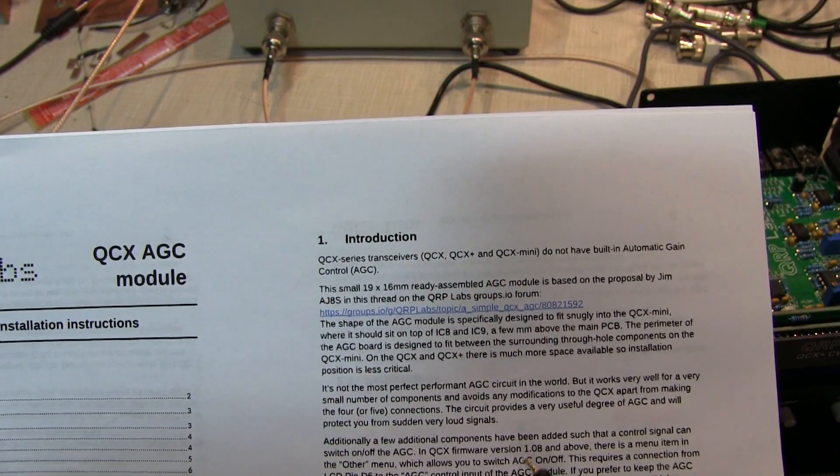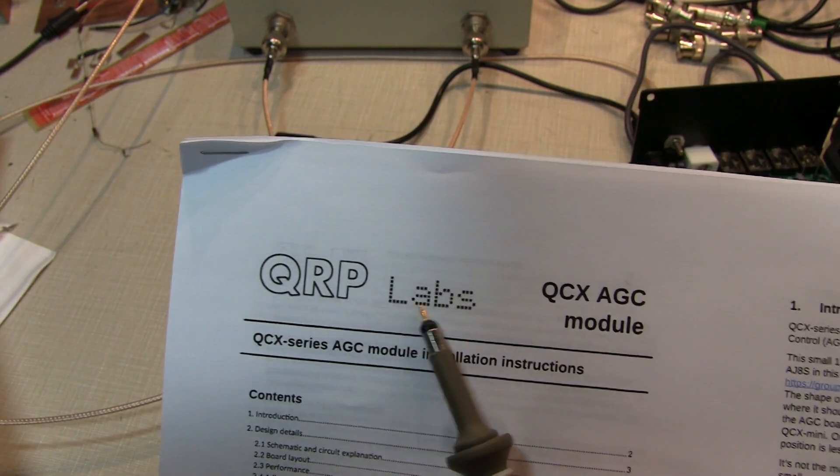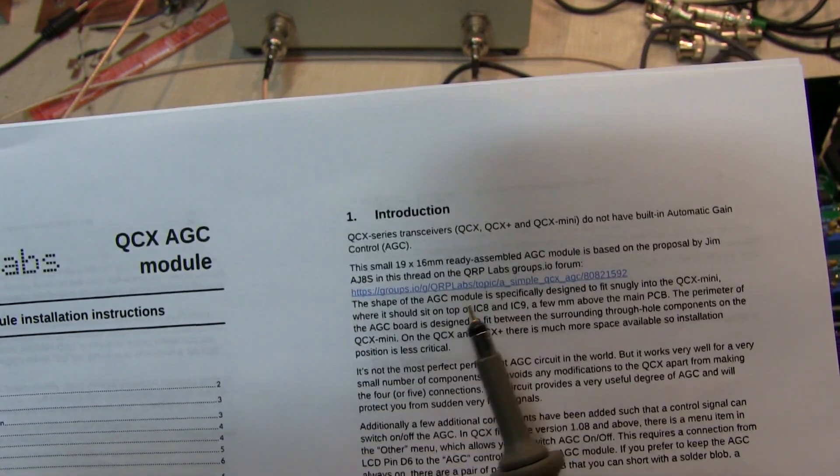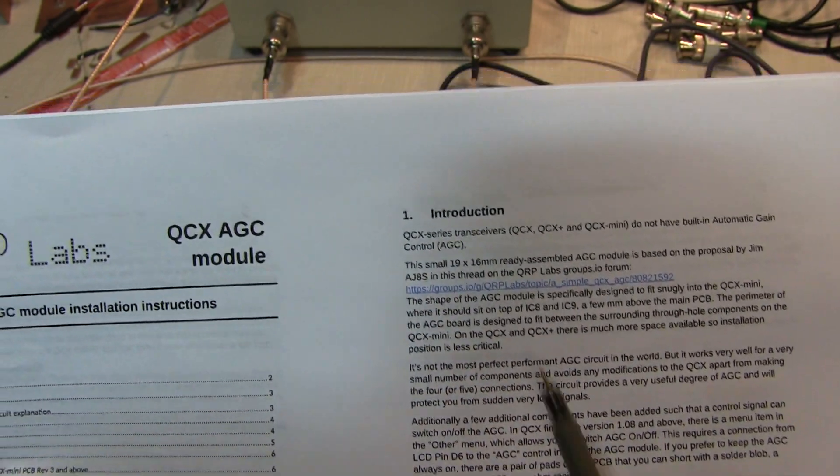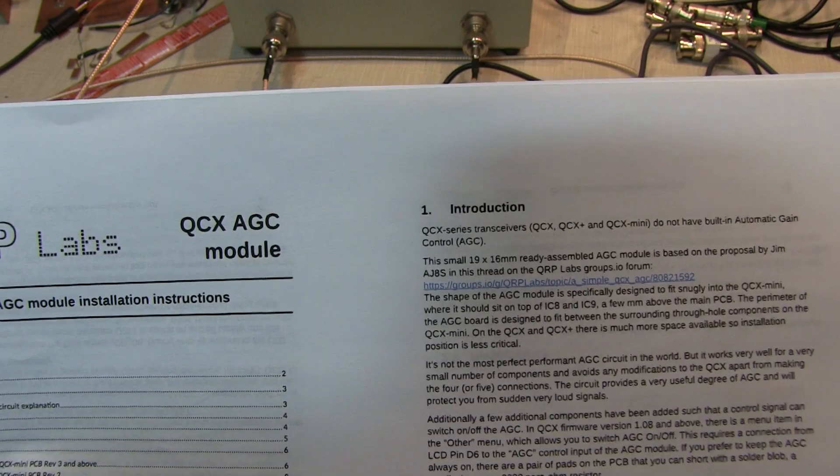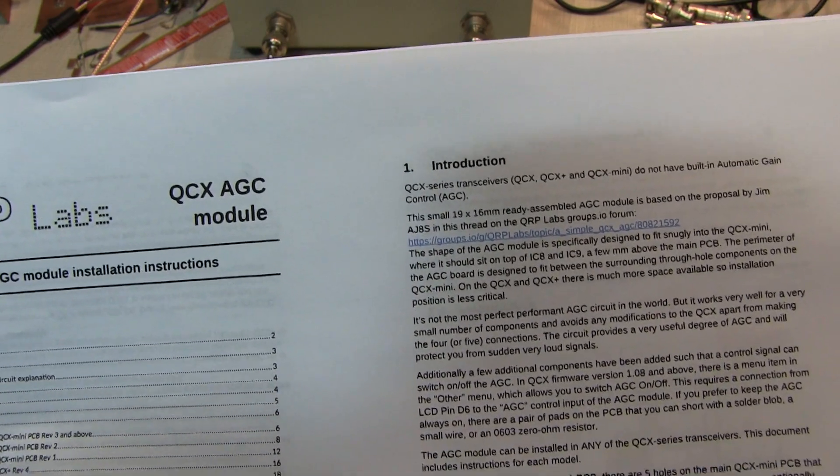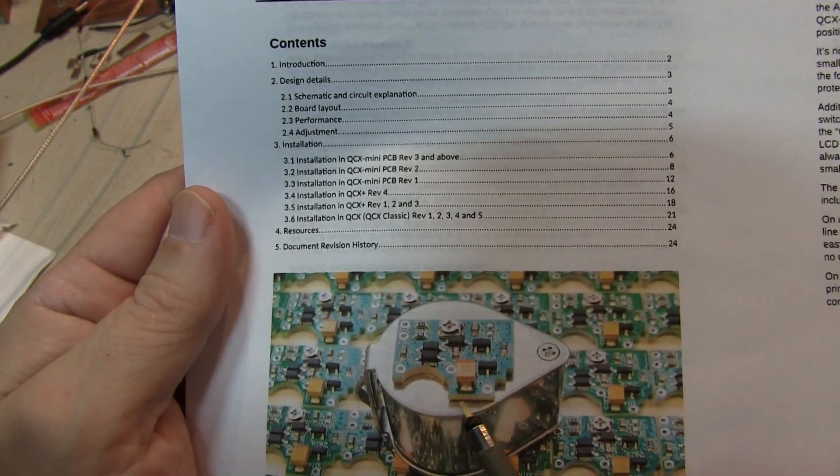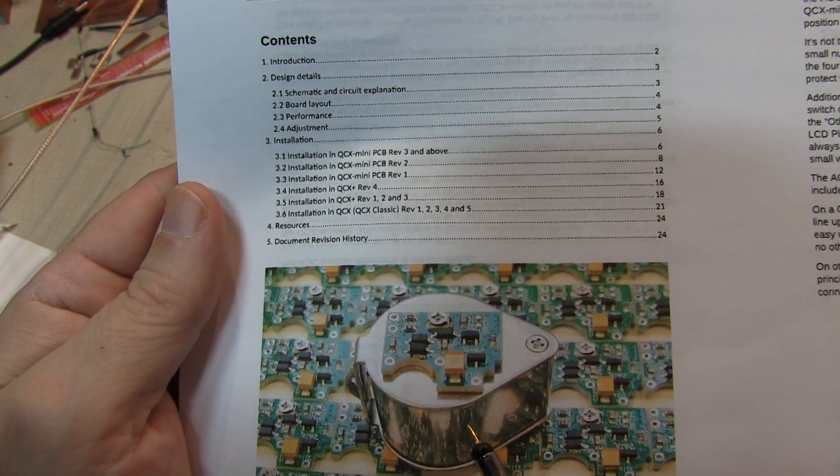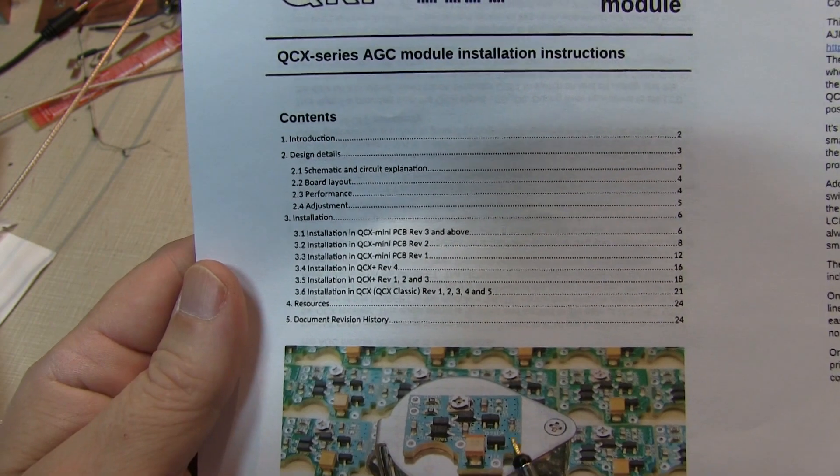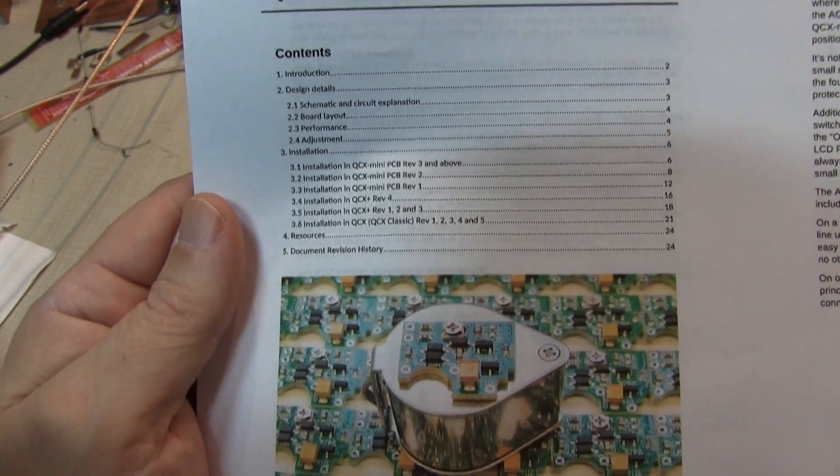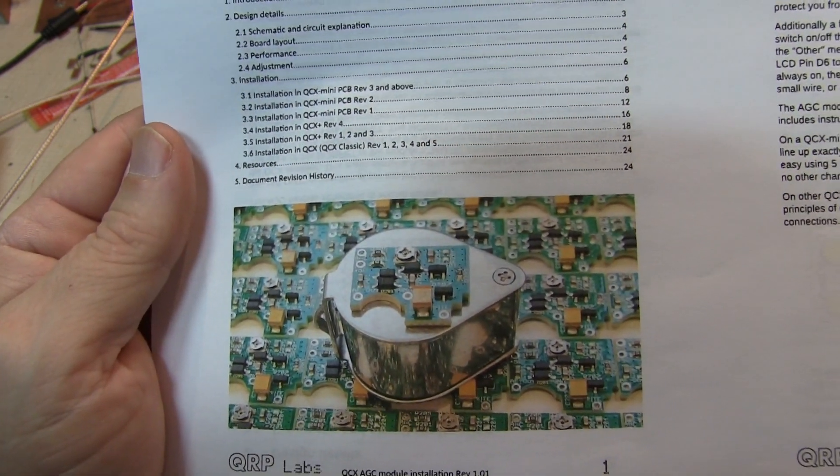Now giving credit where credit's due, this is the manual here for the AGC module, and this design was actually proposed by Jim, AJ8S, in the QRP Labs groups.io. And it's implemented on a tiny little circuit board. It has this oddball shape because there are many different variants of the QCX transceiver, and this will nestle right into the circuit board around some components for many of those designs.